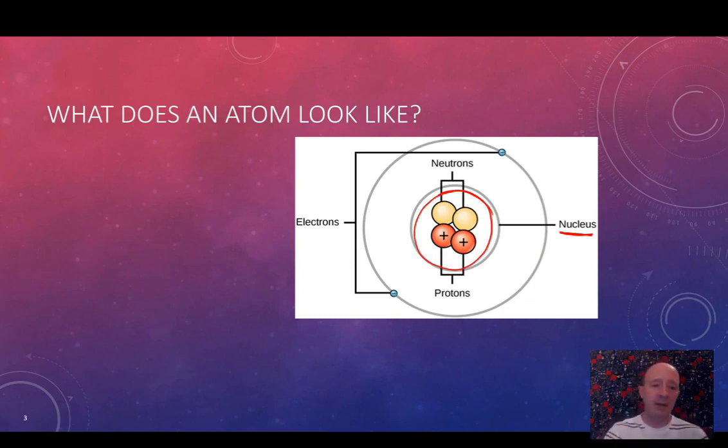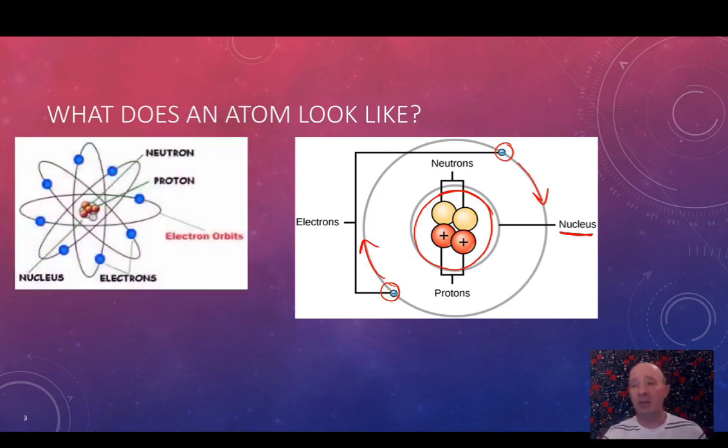And then on the outside you have these little things that we draw in these little orbits, kind of like how the planets orbit the sun - those are the electrons. We're going to look at each of these pieces in pretty good detail as we move forward. Here's another picture of a larger atom, which is an atom of carbon.